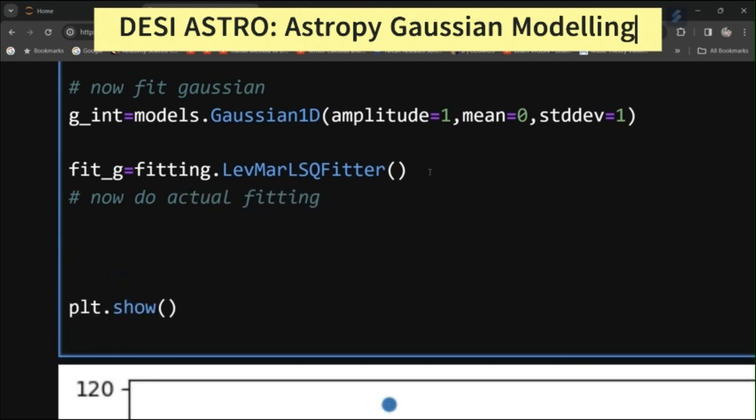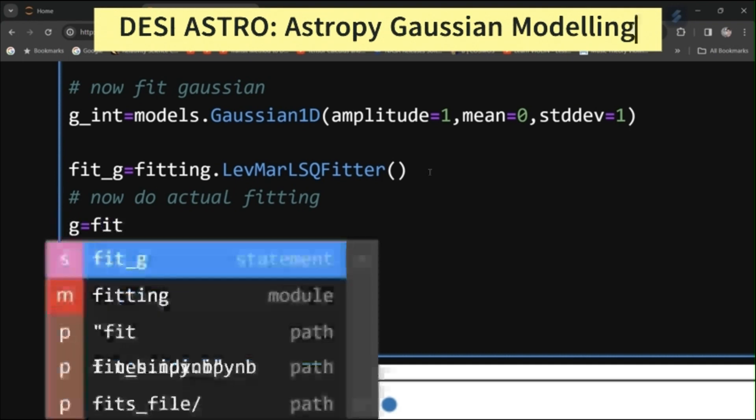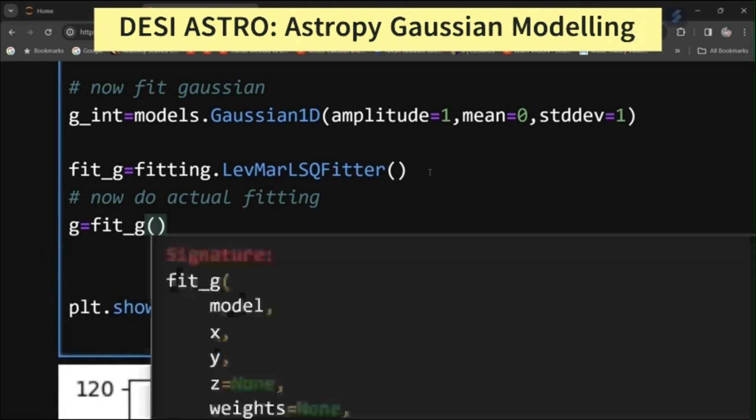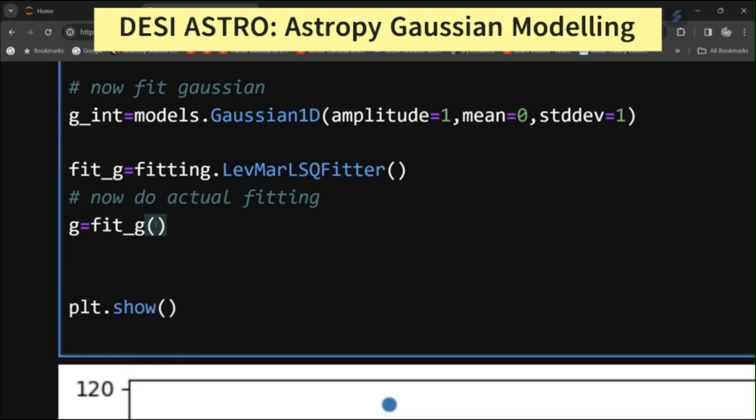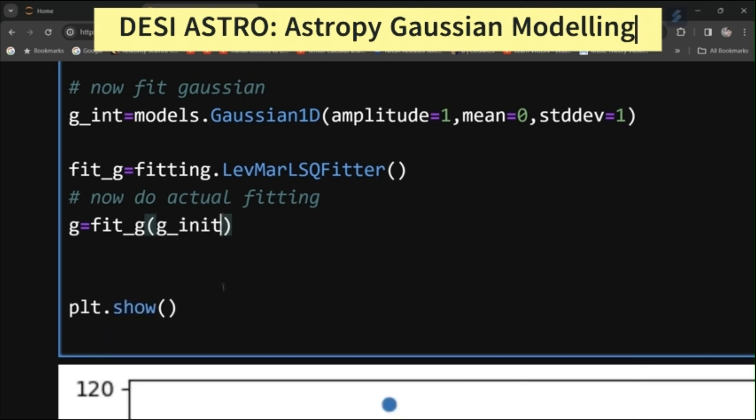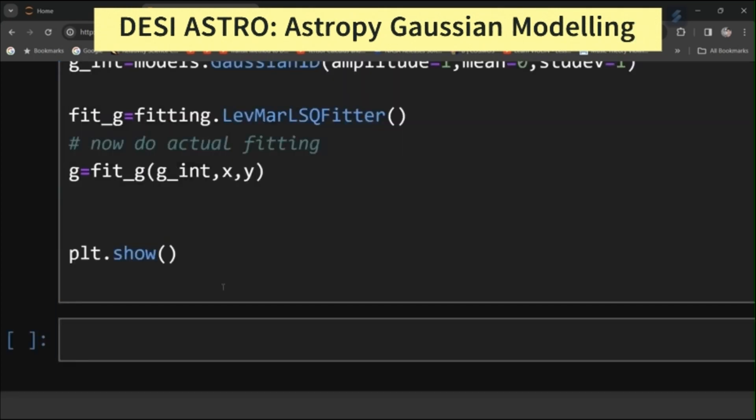For that, type here g equal to fit_g, pass your g_initial model and pass your x and y data. Now run it.